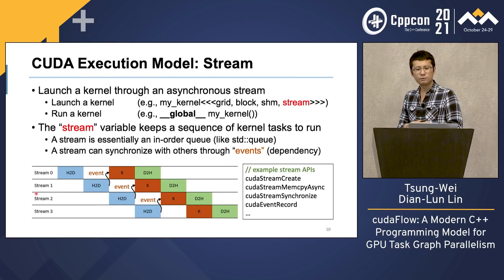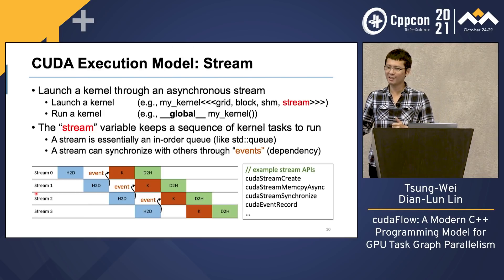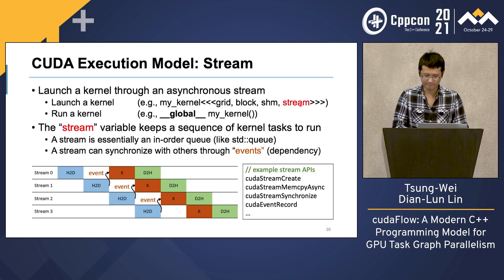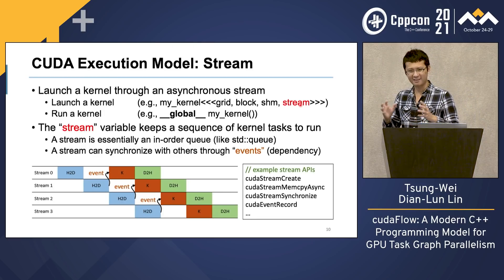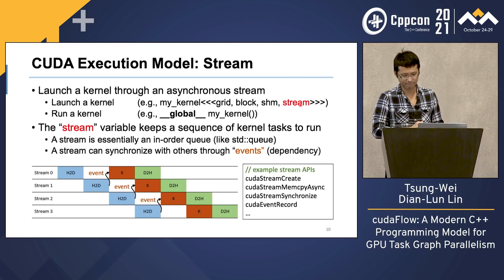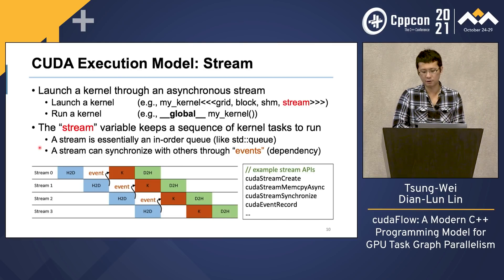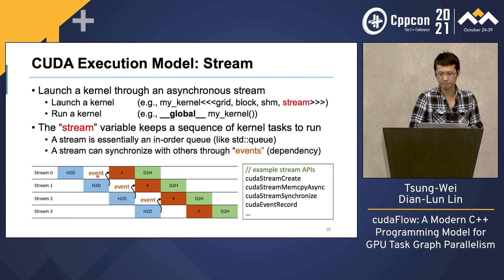One common execution model to run GPU workload is to use CUDA stream. You launch a kernel by inserting that kernel execution into the stream; they can run asynchronously. The stream variable is essentially an in-order queue that keeps a sequence of kernel tasks to run — like a C++ std::queue. The first kernel you insert into the stream will be the first kernel to run. With multiple streams, you can overlap execution between kernels to achieve kernel concurrency, and you can also specify events between different streams to synchronize GPU operations, allowing you to build a dependency graph.